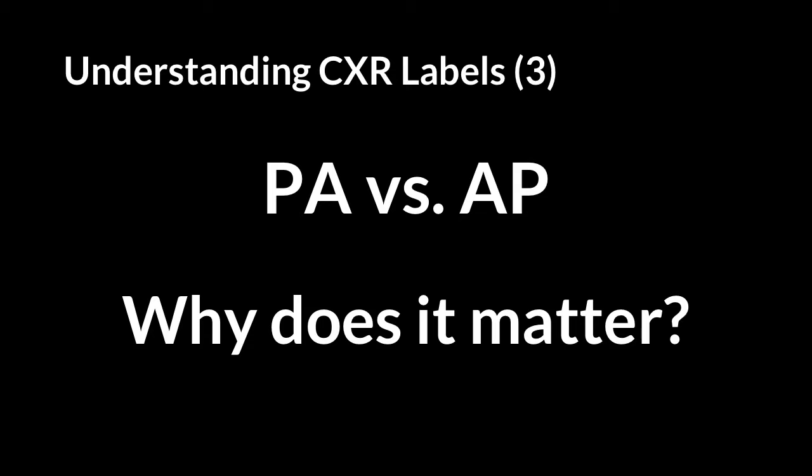Applying the silhouette sign: the left heart border has been lost — you can see the heart but it becomes hard to distinguish where it stops because of adjacent consolidation of the same density. This gives the silhouette sign — a loss of borders between adjacent structures of the same density. A loss of the left heart border indicates the consolidation is in the lingual lobe of the left lung.